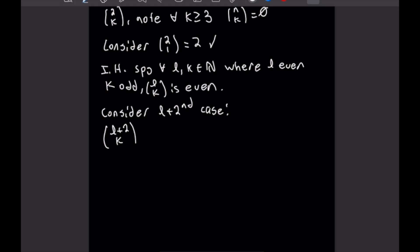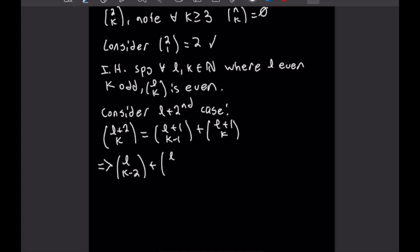To simplify this we use the recursion formula for binomial coefficients. This gives us l plus 2 choose k equals l plus 1 choose k minus 1 plus l plus 1 choose k. Applying the recursion formula one more time gives l choose k minus 2 plus l choose k minus 1, and then l choose k minus 1 plus l choose k.